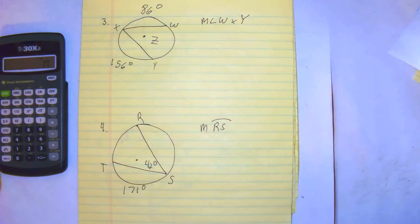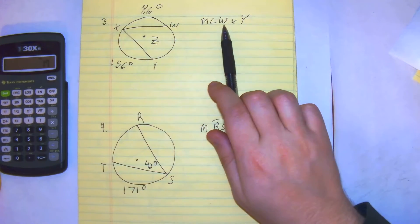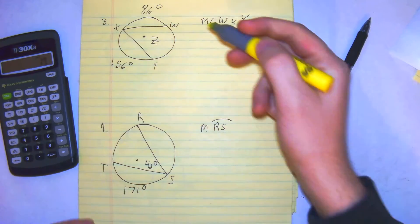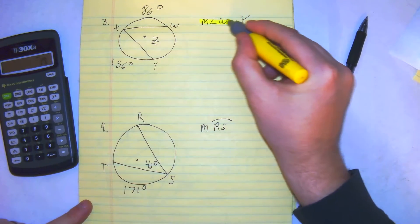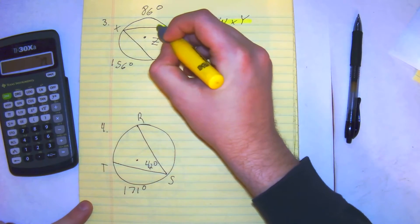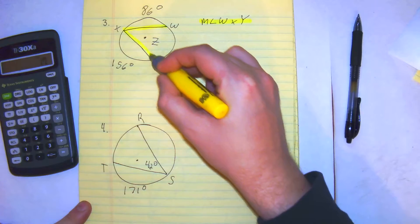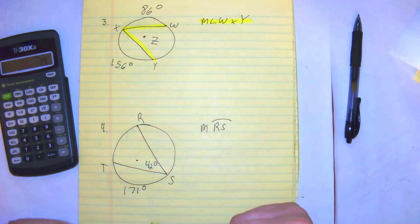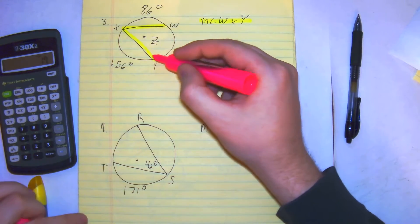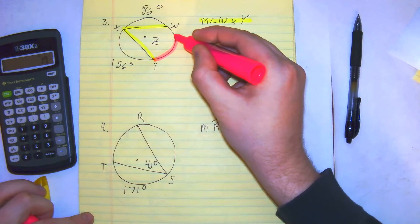We're looking at number 3. Number 3 wants us to find the measure of wxy. If we look, wxy is our inscribed angle. It's inside of the circle. That's our inscribed angle, that's what we want. And to find that, we need to know the intercepted arc, which we don't know.